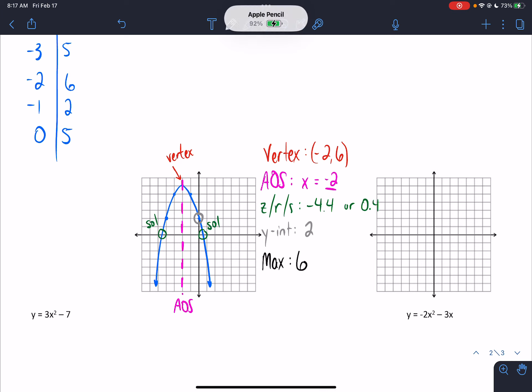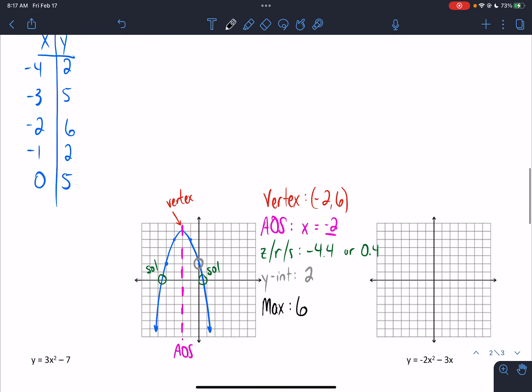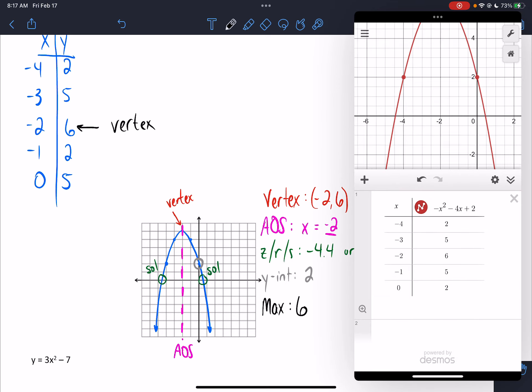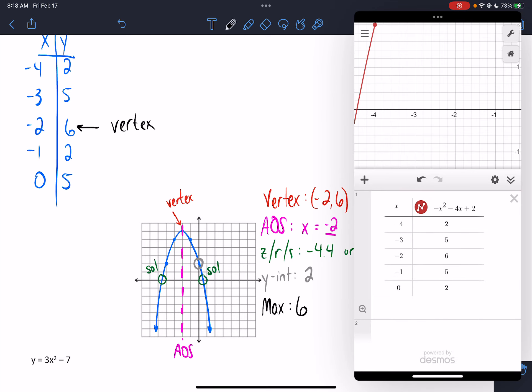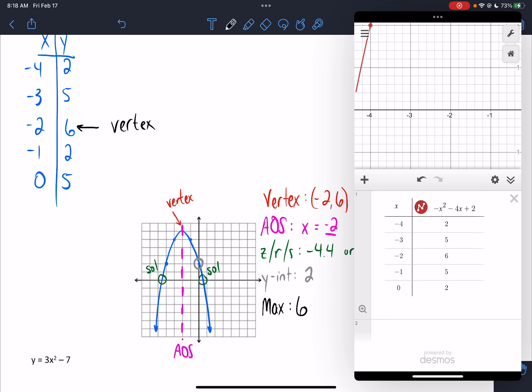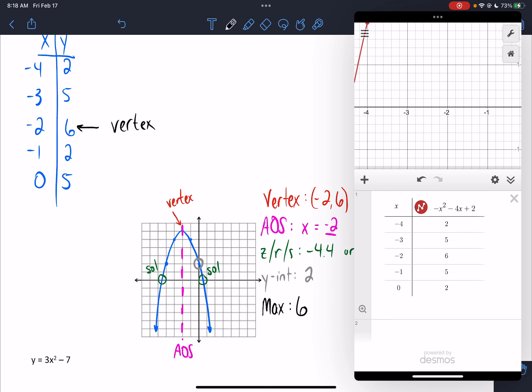But so that's how you do a problem where your graph is shifted over to the left. Redo your table. Make sure that your middle number of your table is always your vertex. And remember that you can use Desmos. You can zoom in and get those whole number black lines to help you figure out what are the whole numbers next to negative 2 that you can use. So hopefully that helps.